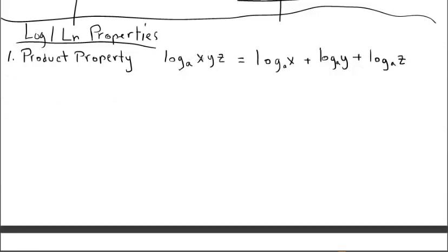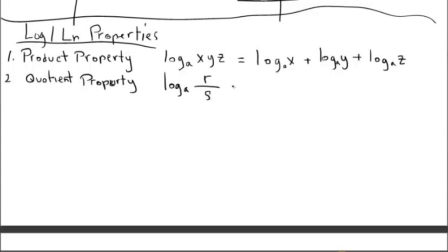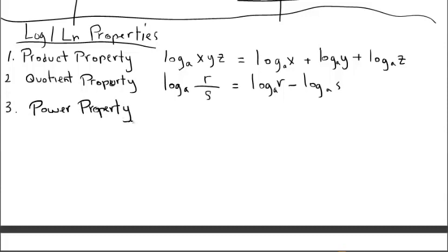The quotient property says that if we're dividing — say functions r and s — it may be helpful to subtract the logs instead: log base a of r minus log base a of s. The power property says that if we have a coefficient or constant multiplier — for example, 7 times log base a of x — we can shift that coefficient as an exponent onto the argument, writing it as log base a of x to the 7th power.